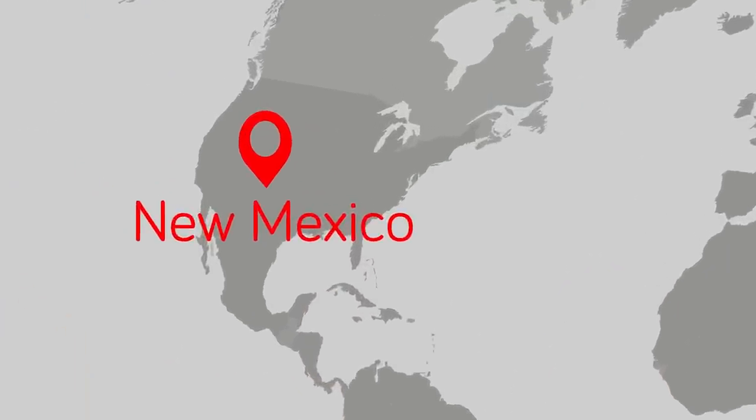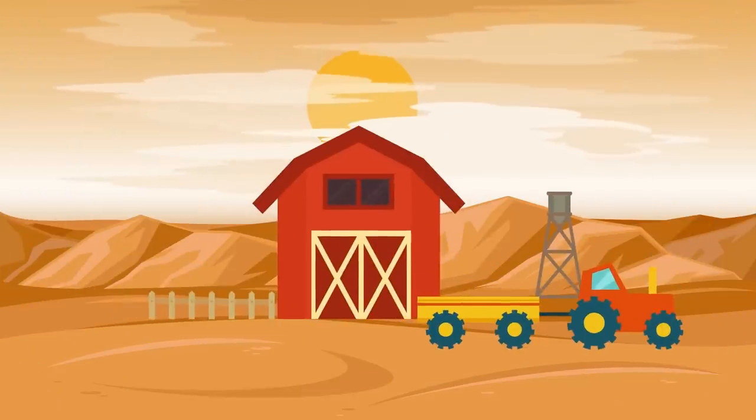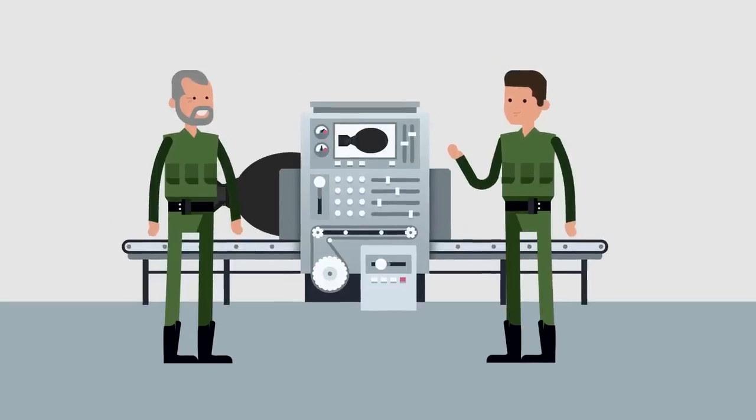22. The scientists at the Trinity Test Site worked out of a ranch house that had been bought by the government when it acquired the land. The master bedroom of the house was then turned into a clean room for assembly of the core of the first nuclear bomb. In that bedroom at least, is literally where the boom-boom happened.